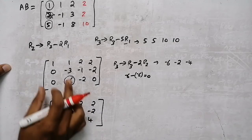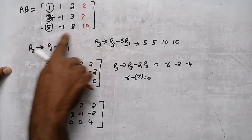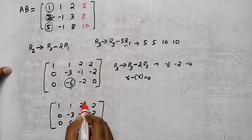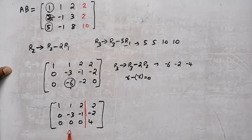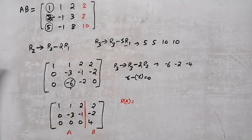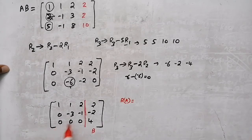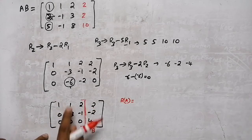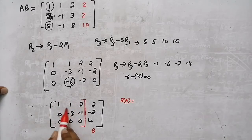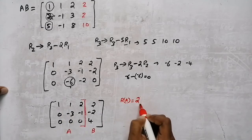This is a 3×3 matrix. I will split this into my A matrix and my B matrix. Now I will find the rank of A. The rank of A is the number of non-zero rows. This is a 3 by 3 matrix — there is a non-zero row here, a non-zero row here, and a non-zero row here. So we find the rank of A.